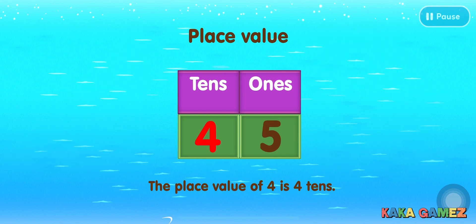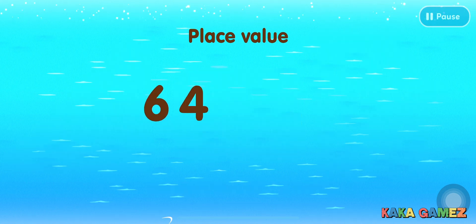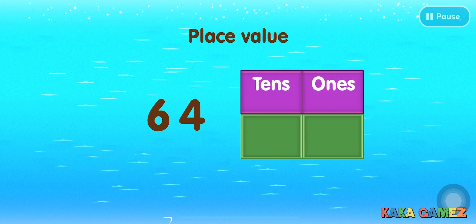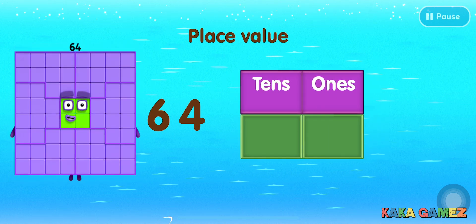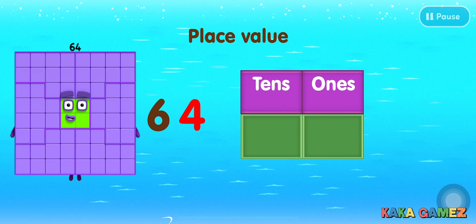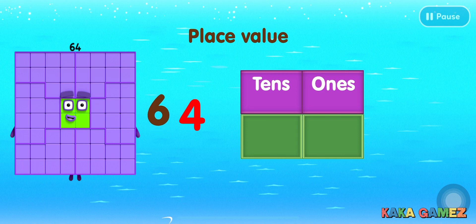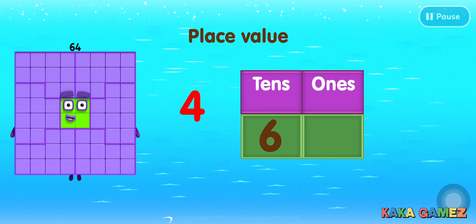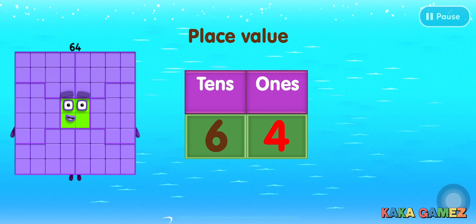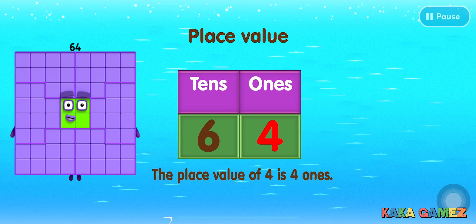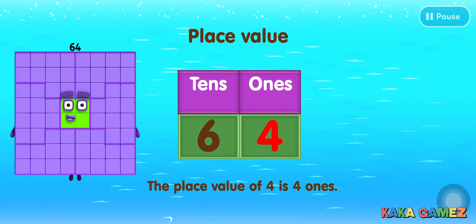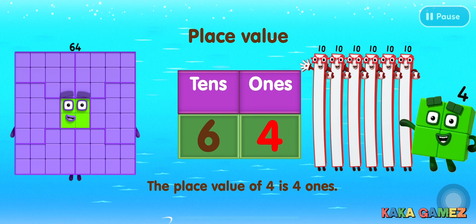Let's look at another example with the number 64. What is the place value of the digit 4? If we decompose 64 into tens and ones, then we have 6 in the tens place and 4 in the ones place. In this example, the place value of 4 is 4 ones, which really just means 4.